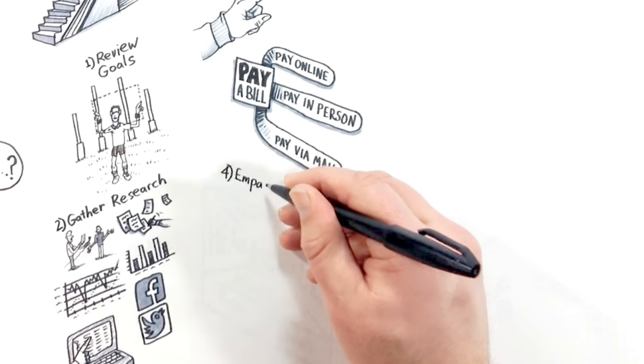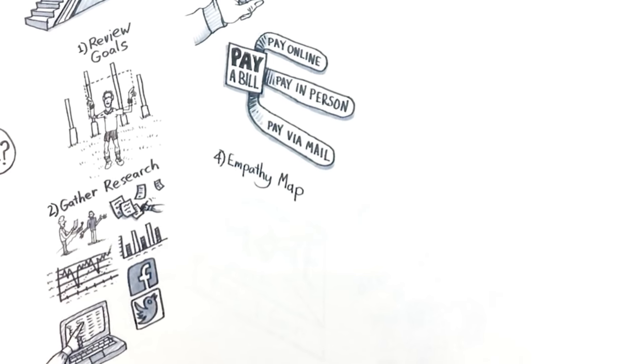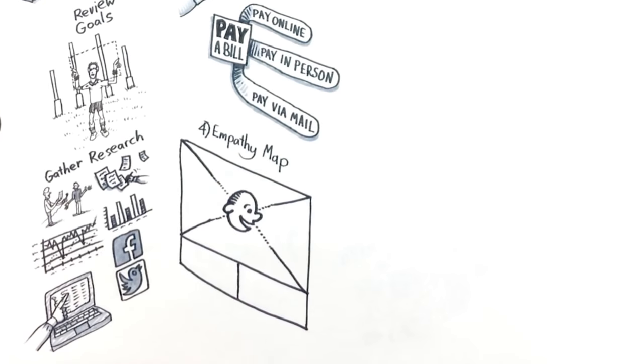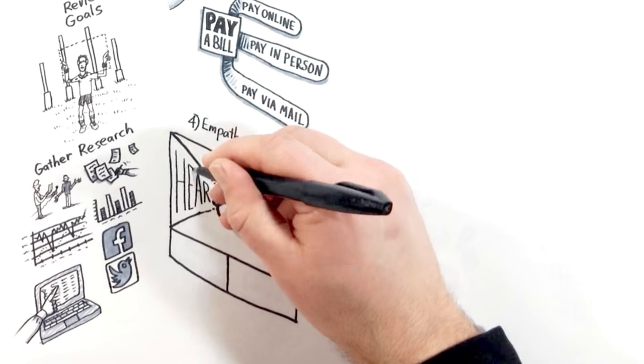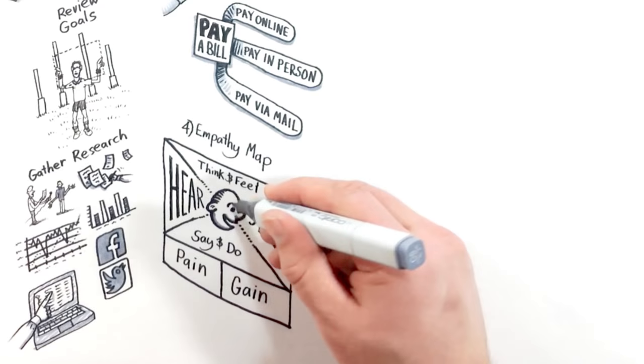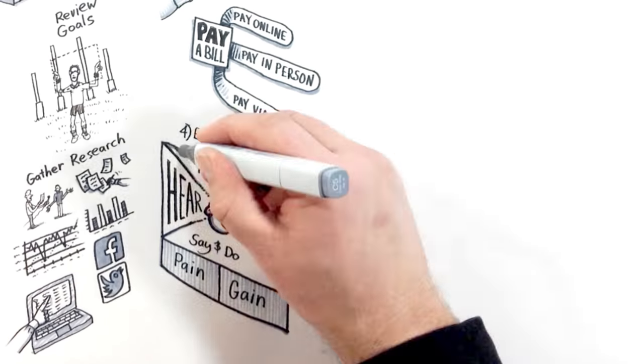Number four, conduct an exercise called an empathy map. Empathy maps depict the various facets of a persona and his or her experiences in a given scenario. The goal of the empathy map is to get a sense of how it feels to be that customer in this experience.